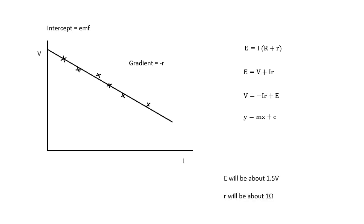The EMF obviously is going to be about 1.5 volts, and the internal resistance will be about an ohm, maybe a little bit less. It's usually around an ohm for these cells.